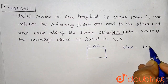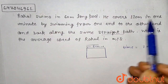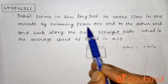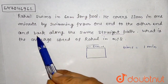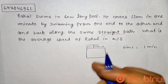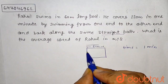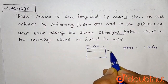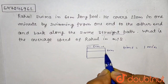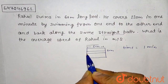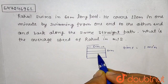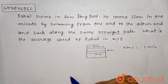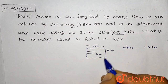Time equals one minute. He swims from one end to another end along the same straight path. So if we swim from one end to the other, we cover 60 meters. When we go back to the other end, we cover another 60 meters. So total distance covered is 60 plus 60 equals 120 meters.